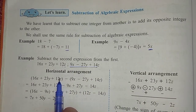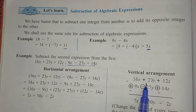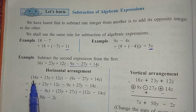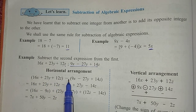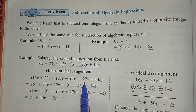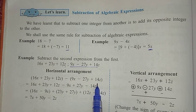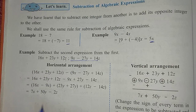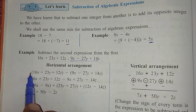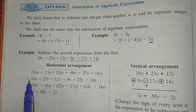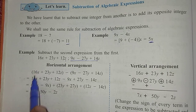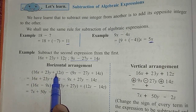The same rules are applicable for both horizontal and vertical methods. Write the first expression here: 16x plus 23y plus 12z. Minus the second expression: 9x minus 27y plus 14z. Now remove the bracket. Here, outside the first bracket there is a positive sign, so all these terms come as they are: 16x plus 23y plus 12z.